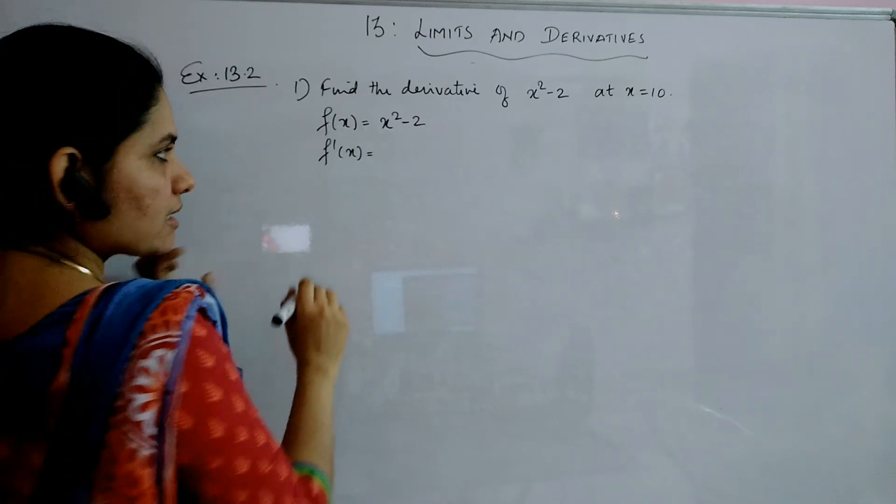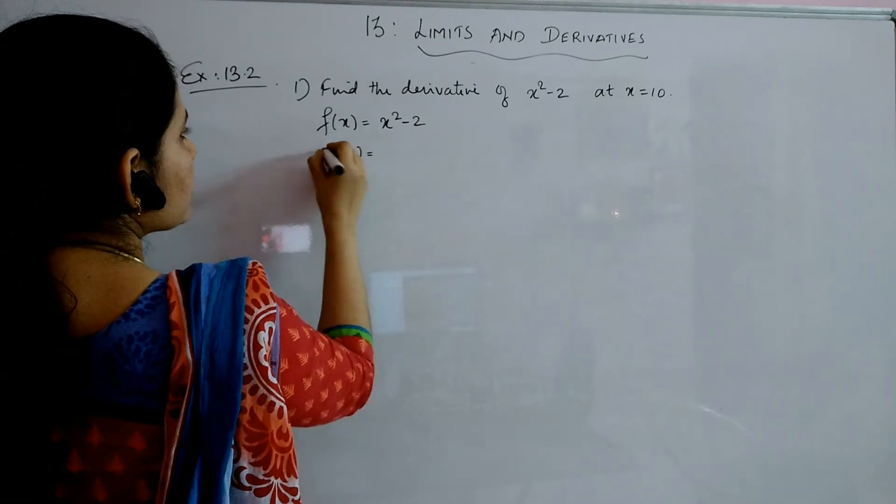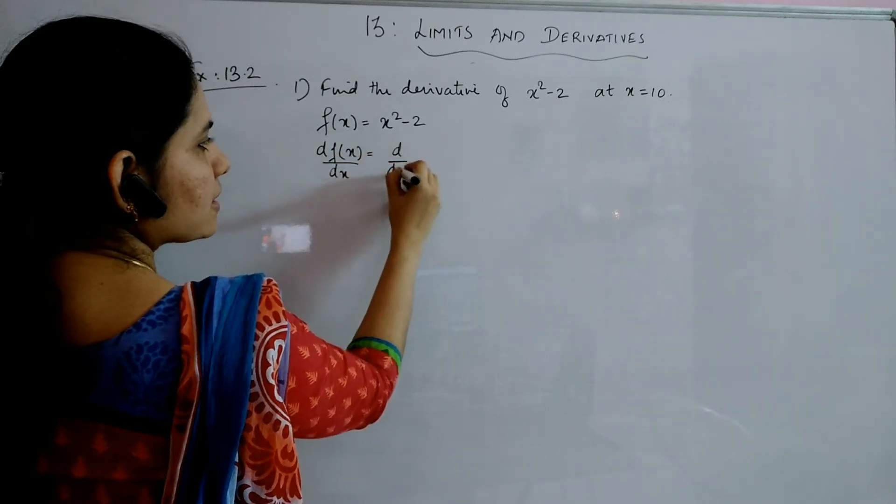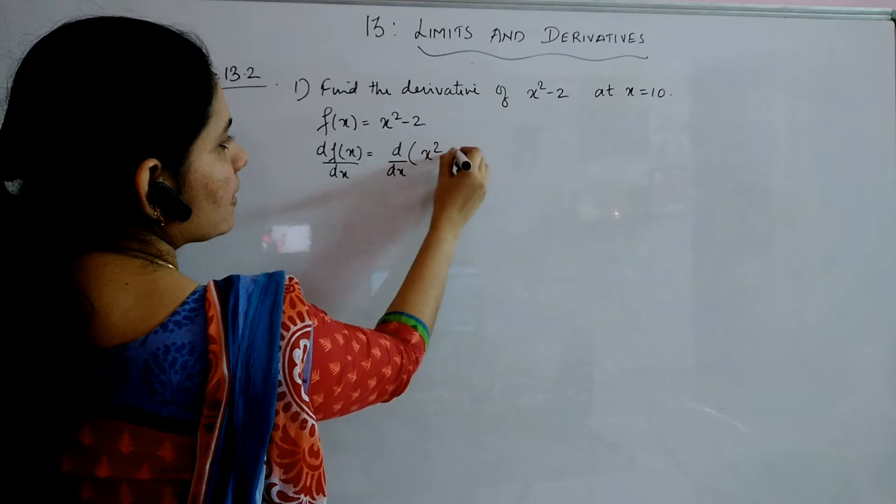f dashed of x is same as d by dx. So if I am writing this as df by dx or df of x by dx, then also it is okay because I need to write here as d by dx of this one.